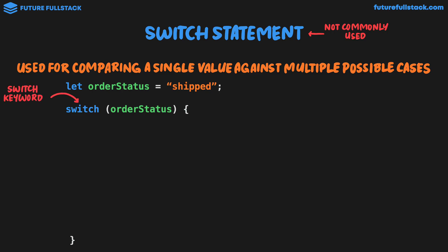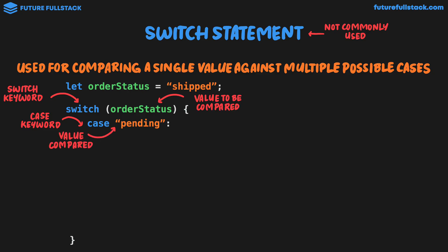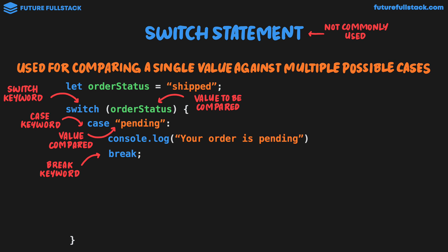We have the JavaScript switch keyword and then inside our brackets we have the value to be compared. Inside our curly brackets we then go through the different cases. For case one we'll be comparing the order status to the string value pending. You can see we use the case keyword followed by the value compared. If the case is pending we would execute some code like console.log your order is pending. The code inside the case is always followed by the break keyword.